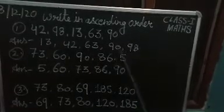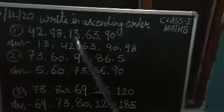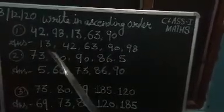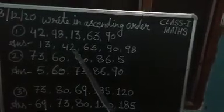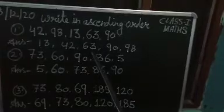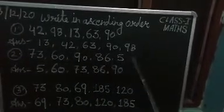Means you have to write the number which comes first in counting. Okay, then you have to choose 13. After that, which number will come? 42. Same as 63. Then you will pick 90 and at last 98.